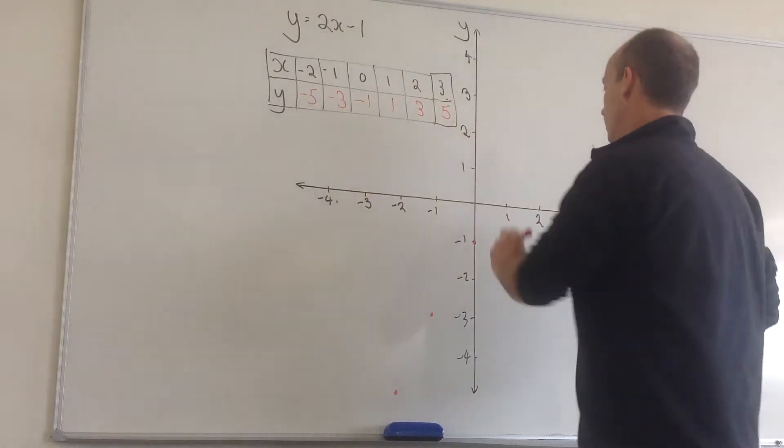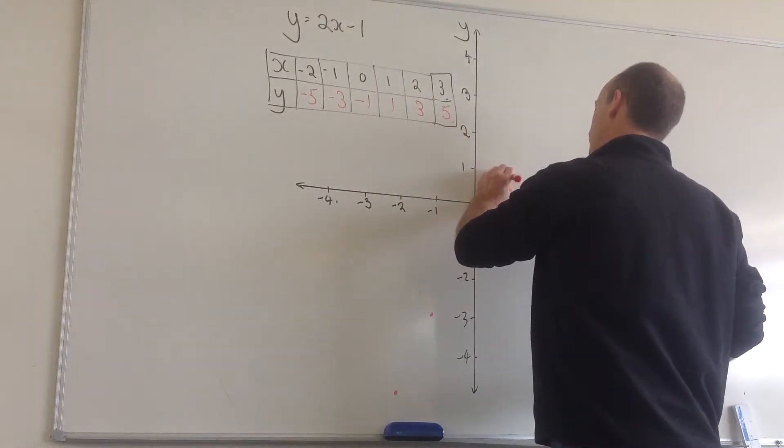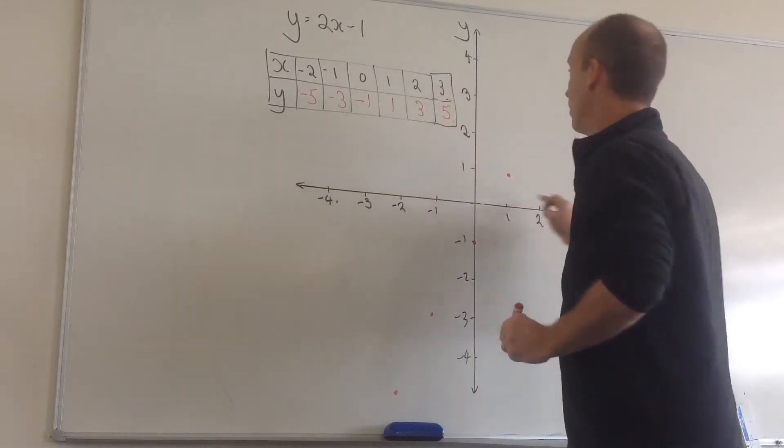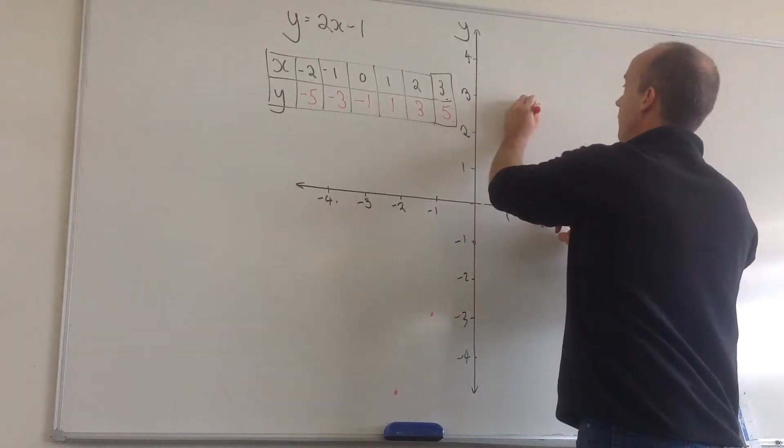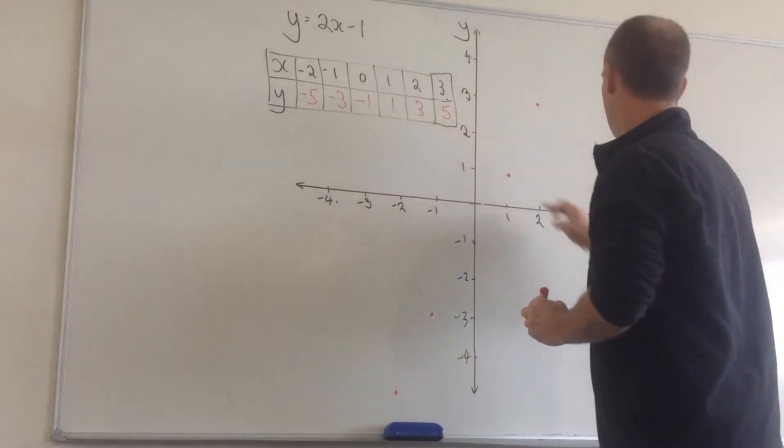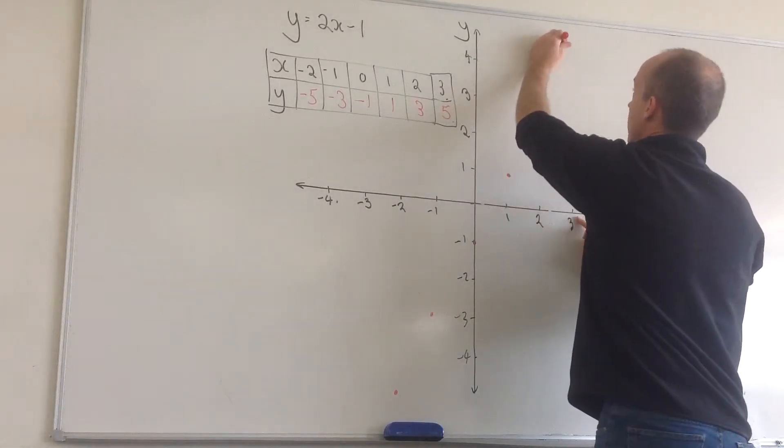When x is equal to 1, y is equal to 1. When x is equal to 2, y is equal to 3. Put a point in there. When x is equal to 3, y is equal to 5. Which is going to be up here.